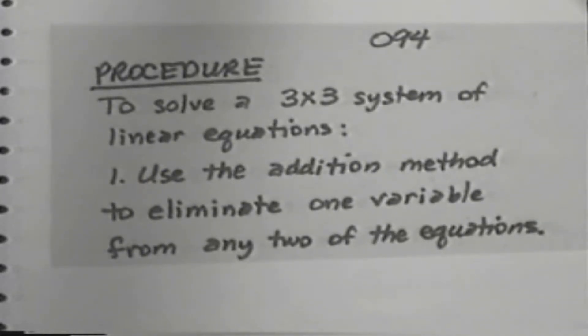Remember that your system has three equations. You pick any two of them you want to, and you go after one of the variables and eliminate it.